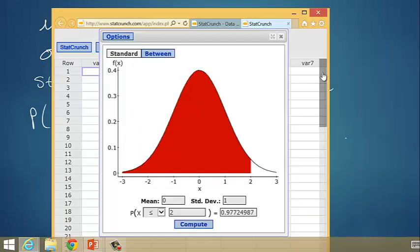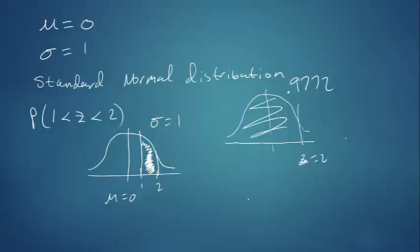Then if we were to change that value to 1, we would have 0.8413. So from here, where z is 1, back, we'd have 0.8413.